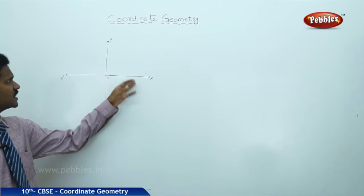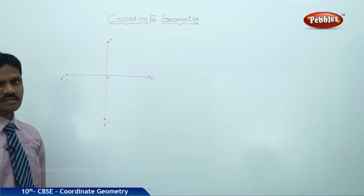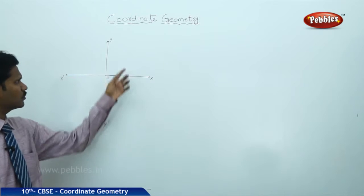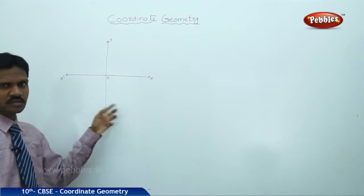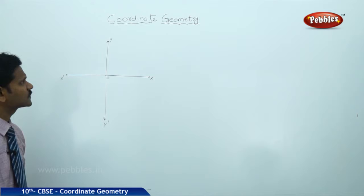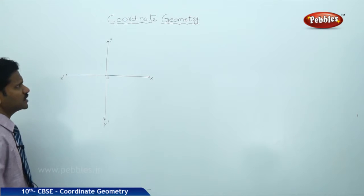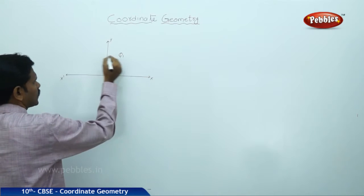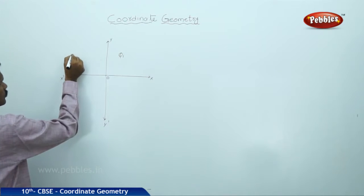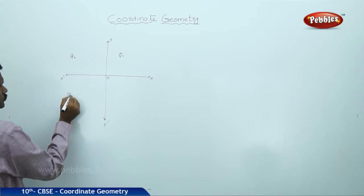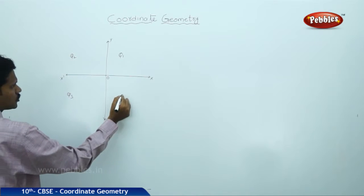The x- and y-axis divide the plane into four parts. Each part is called a quadrant — that is, Q1, Q2, Q3, and Q4.